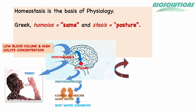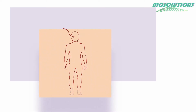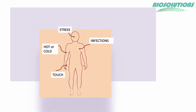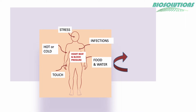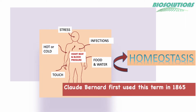Several external and internal factors affect homeostasis, and our body system has an amazing capability of adjusting to maintain important parameters like blood pressure, temperature, breathing, and heart rate.